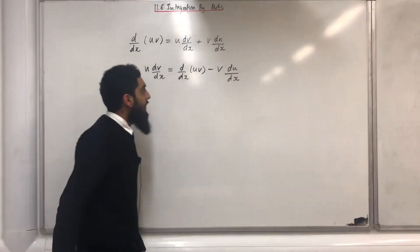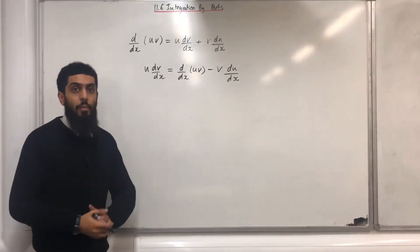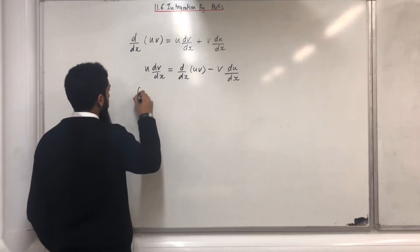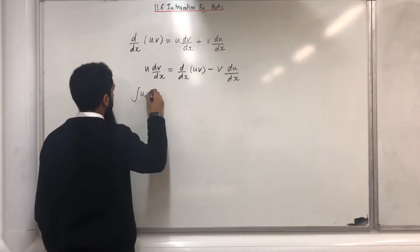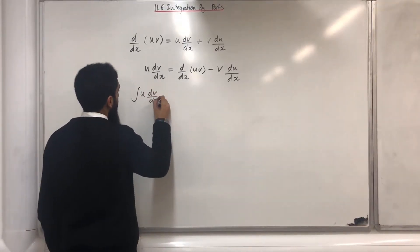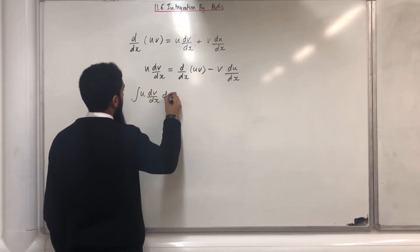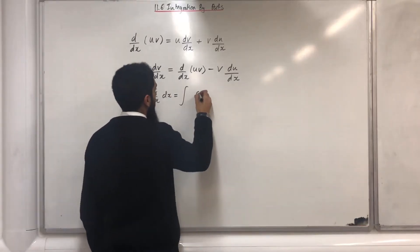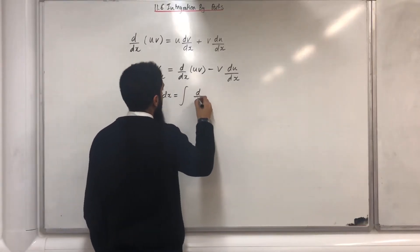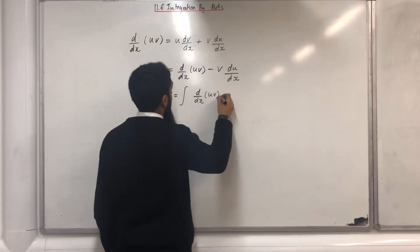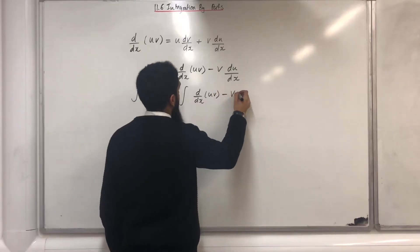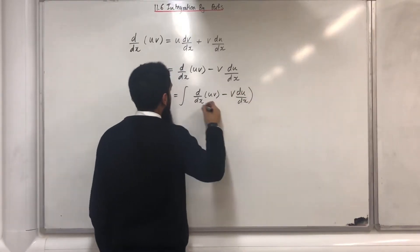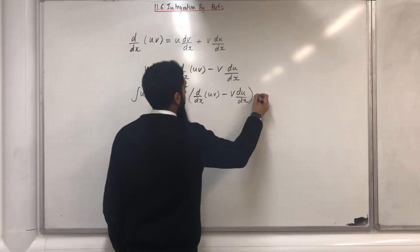The next step is to apply integrals on both sides. So if I do this I get the integral of u dv/dx dx equals the integral of d/dx of uv minus v du/dx, all in brackets, dx.